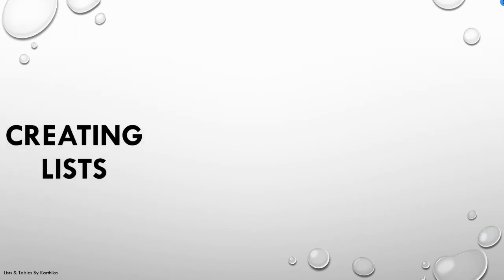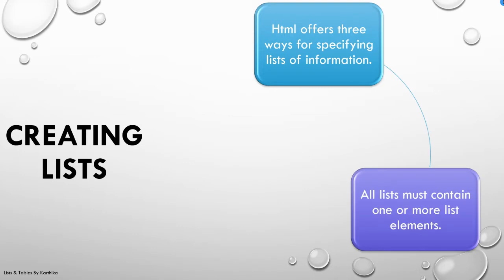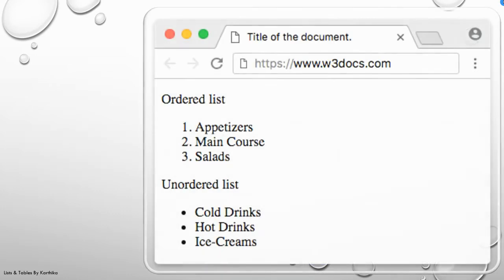Now, how to create a list. HTML offers three ways of specifying a list of information. All lists must contain more than one list element — as it is a list, we should have at least more than one element. We have two types of lists: ordered list and unordered list.